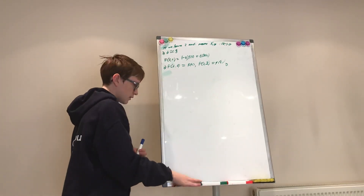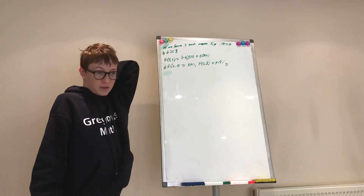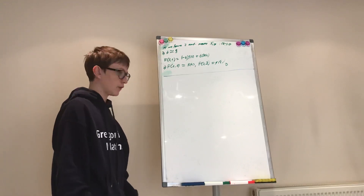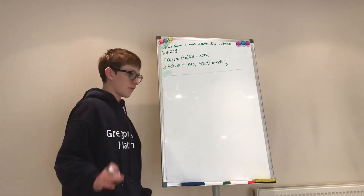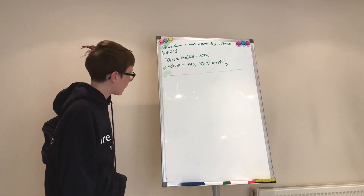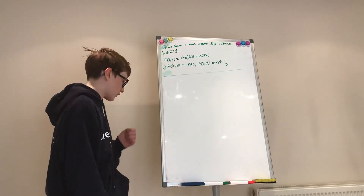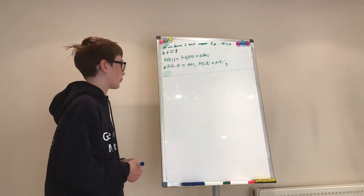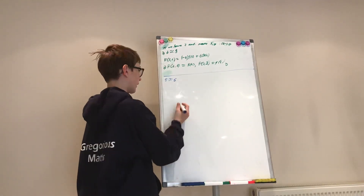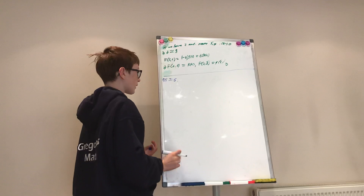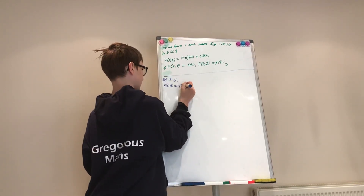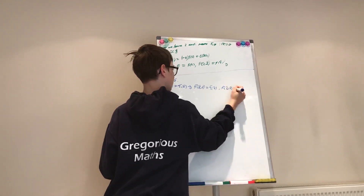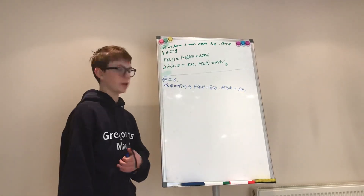So now I said this would be a short video. I'm going to finish by proving that homotopy is an equivalence relation. That means f is always homotopic to itself — that's reflexive. If f is homotopic to g, then g is homotopic to f — symmetric. And if f is homotopic to g and g is homotopic to h, then f is homotopic to h — transitive. Proving reflexivity: we can have capital F of (s, t) equal to f(x), implying that F(s, 0) equals f(x) and F(s, 1) equals f(x). Hence f is homotopic to itself — very easy.